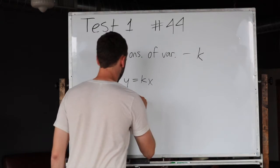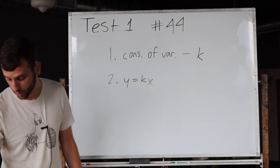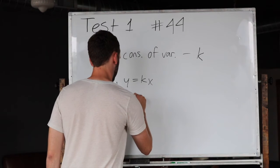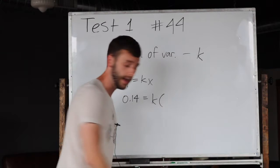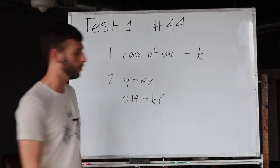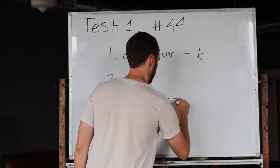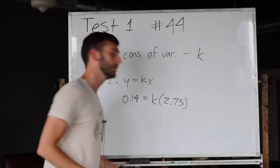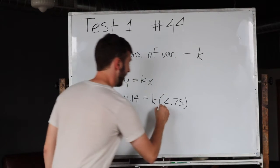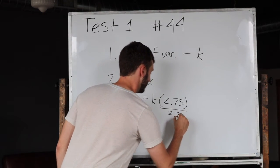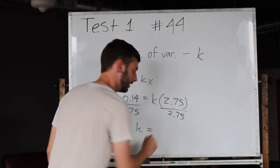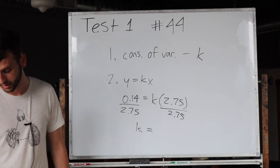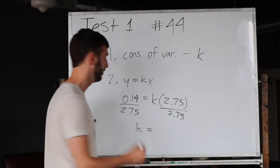So we have y equals 0.14, we're solving for k, and x equals 2.75. So if in my calculator I divide both sides by 2.75, I solve for k and k is equal to 0.05.